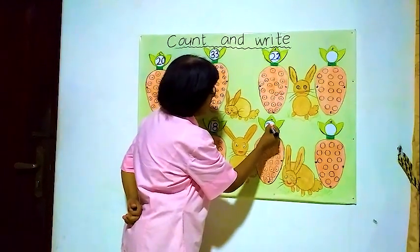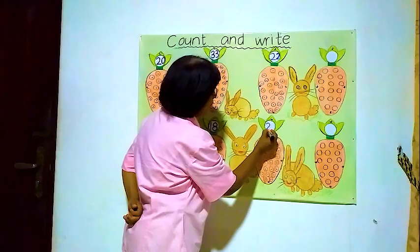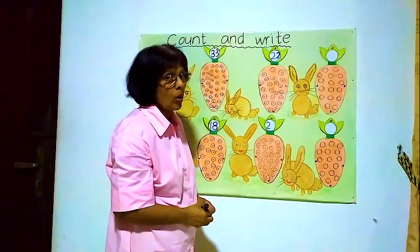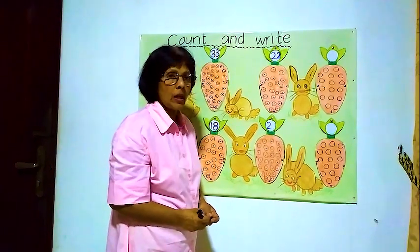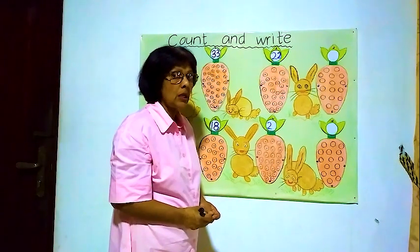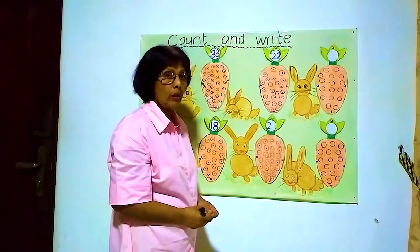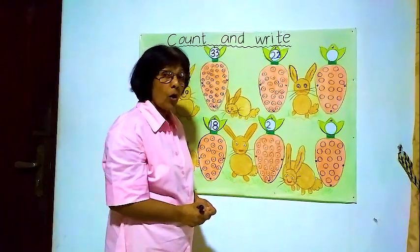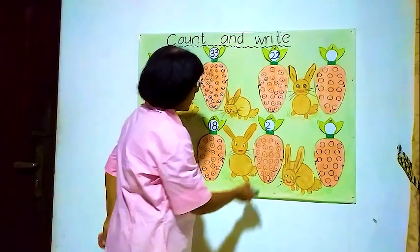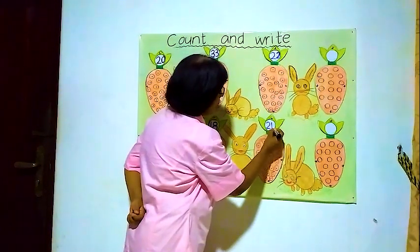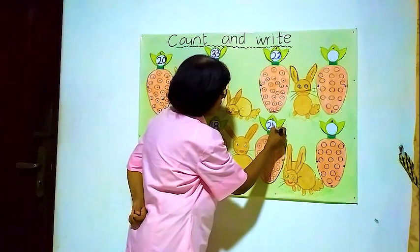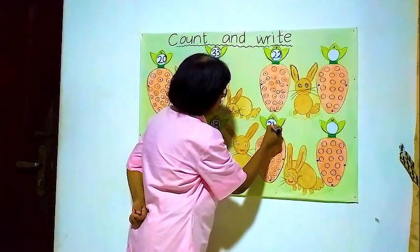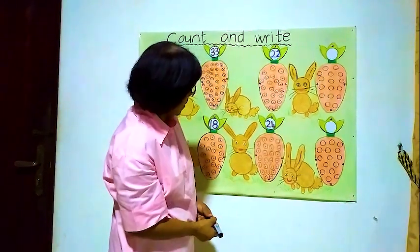We'll write here twenty-four. How to write twenty-four? If I write two, zero — that's twenty. If I write two, one — twenty-one. If I write two, two — twenty-two. If I write two, four — twenty-four. That is the number we want. I'll write here twenty-four: two and four.